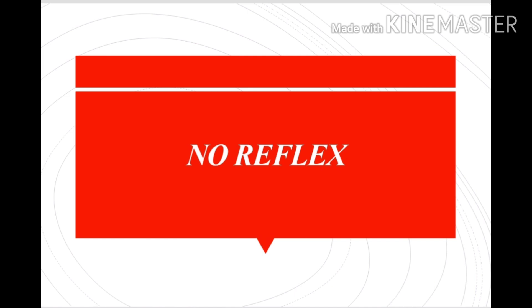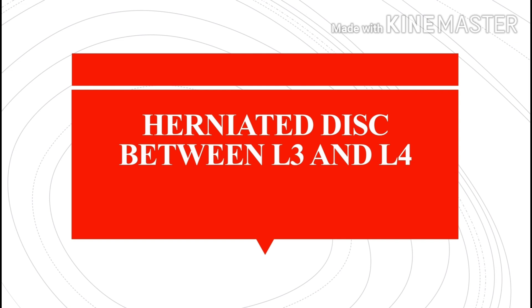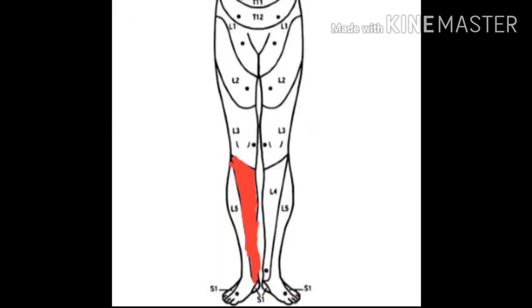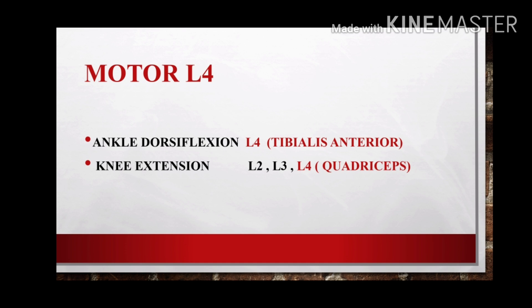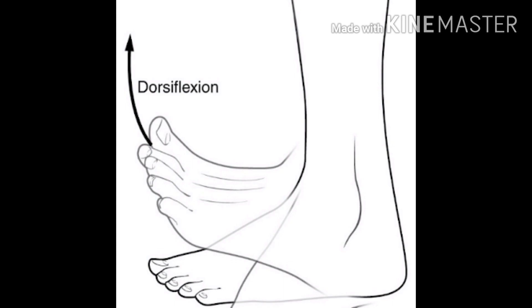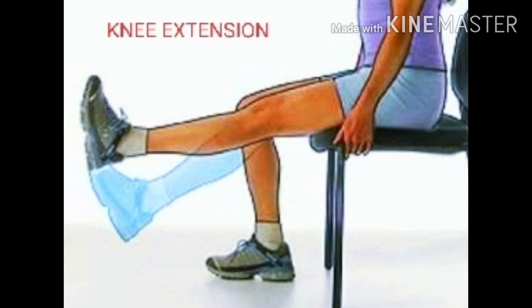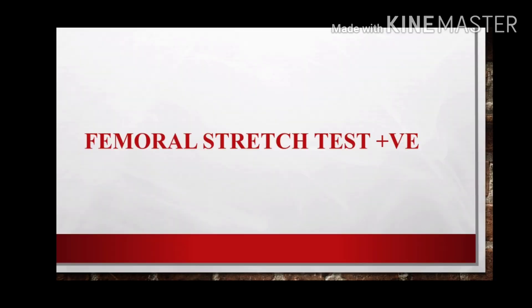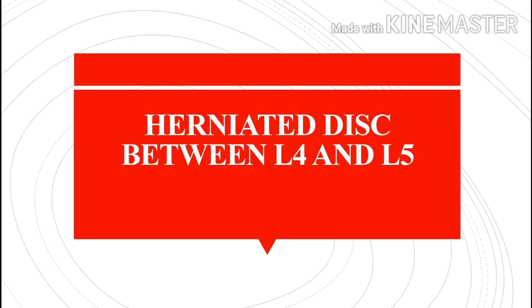There is no reflex for the L3 nerve root. If there is any herniated disc between L3 and L4 vertebrae, the L4 nerve root will get affected. The sensory area of L4 is the medial aspect of the leg down to the medial aspect of the ankle joint. The motor function is ankle dorsiflexion done by the tibialis anterior, and knee extension done by the quadriceps. The patellar reflex is mainly driven by the L4 nerve root. The femoral stretch test can be positive with herniation between L3 and L4.